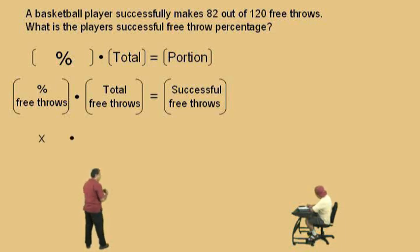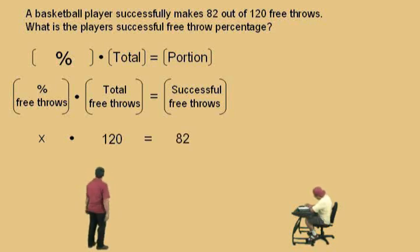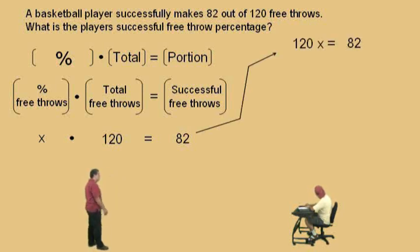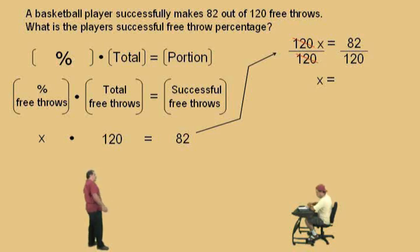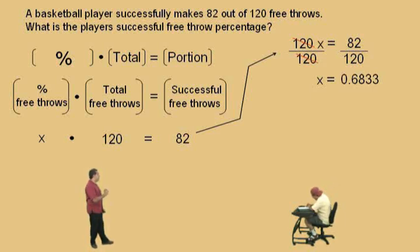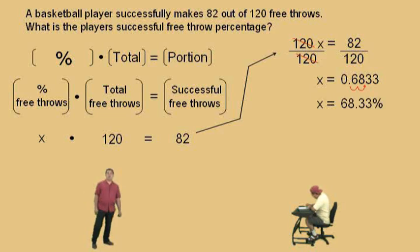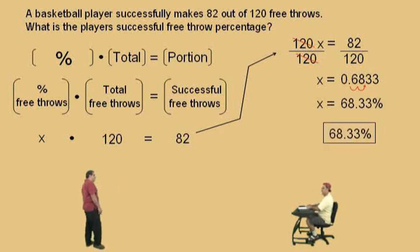Our total free throws is 120, and our successful free throws is 82. So there's our equation: x times 120 equals 82, which is the same as 120x equals 82. How do we solve for x? Divide both sides by 120. The 120s cancel, and get your calculator out — take 82 divided by 120, round to the nearest ten-thousandths, that's four decimal places. We get 0.6833. To change a decimal to a percent, move the decimal right twice. So our answer is 68.33 percent — that's the player's successful free throw percentage.